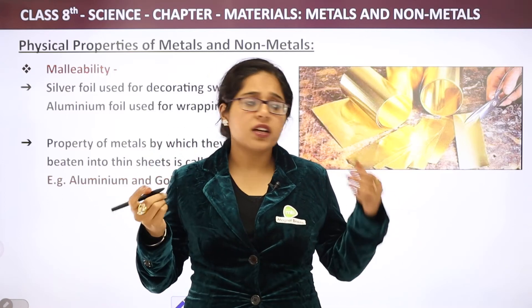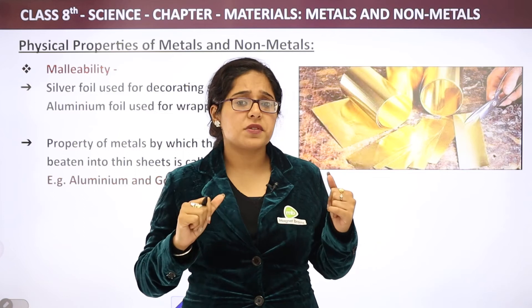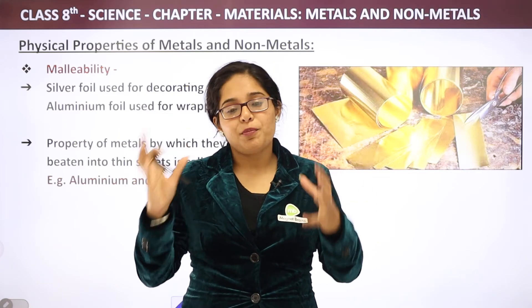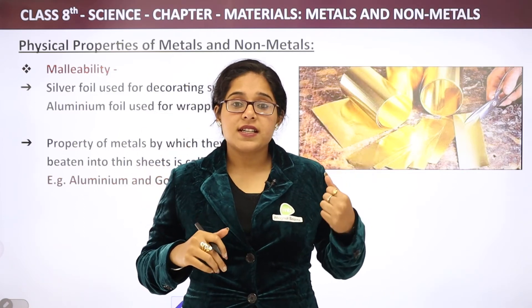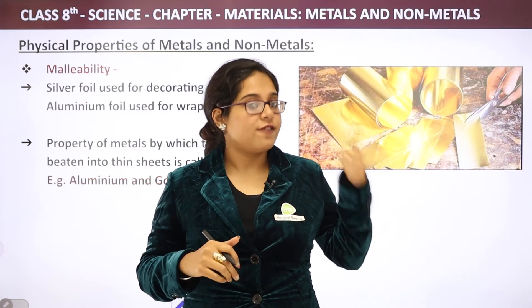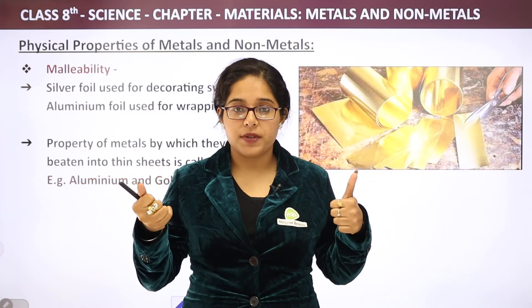So how do we know which substance is a metal and which is a non-metal? We identify them from their properties. There are two types of properties: physical properties and chemical properties.